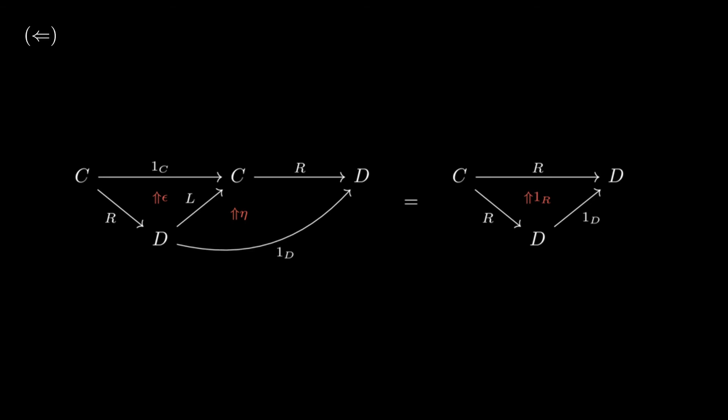R preserves L as a right Kan extension. So there is a right Kan extension RL that is hidden here. Then 1D comma 1R is another pair that commutes, so by properties of the right Kan extension, there must exist a unique map eta from 1D to LR. So that's what we're defining eta as.